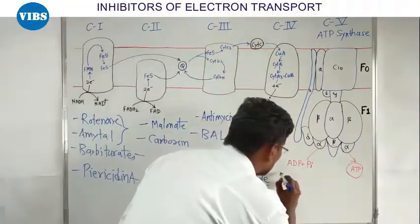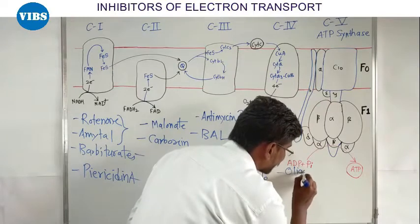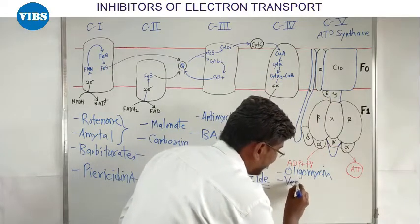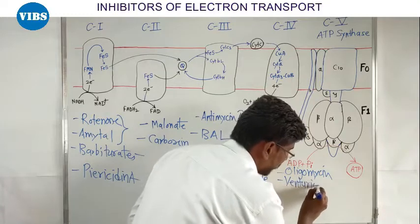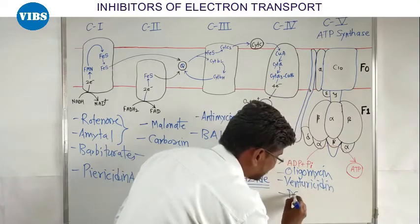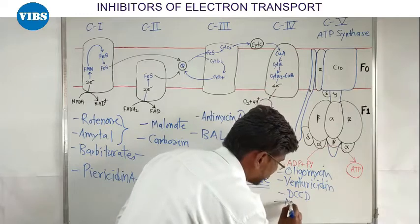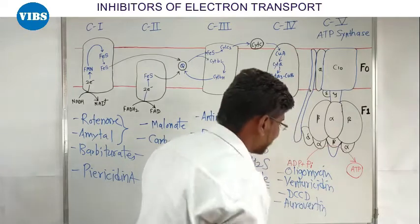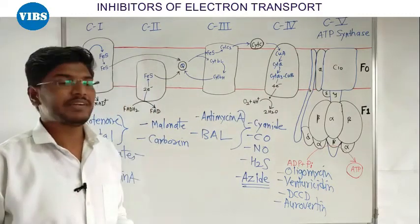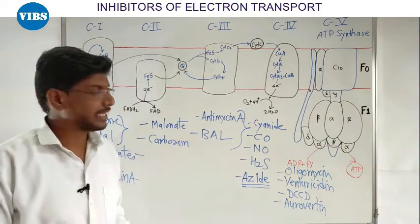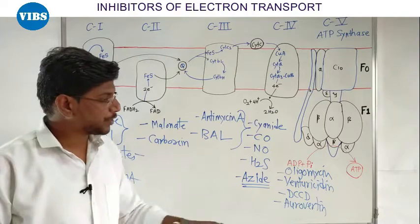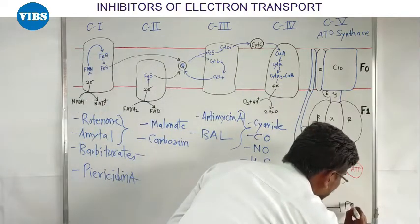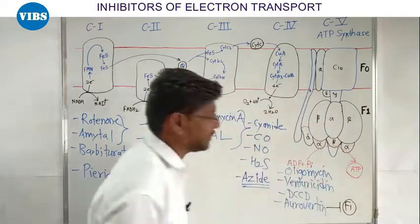The inhibitors of ATP synthase (F0F1 ATPase) are: Oligomycin, Venturicidin, DCCD, and Aurovertin. Aurovertin inhibits the F1 component of ATP synthase. Oligomycin, Venturicidin, and DCCD inhibit the F0 component, blocking the proton channel and thus inhibiting ATP synthesis.